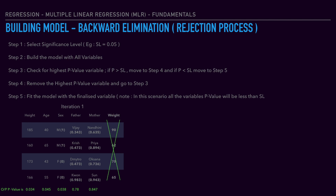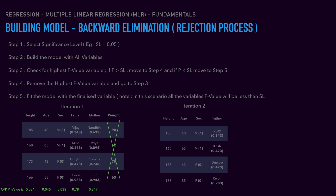In iteration 2, we remove the mother variable since it had the highest p-value. Now we have 4 variables. Again, we build the model with 4 variables and check the p-value of each independent variable. The father variable now has a p-value of 0.68, and the remaining variables are less than 0.05. So now we need to remove the father variable and build the model with 3 variables.